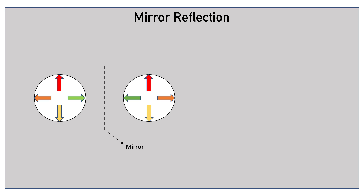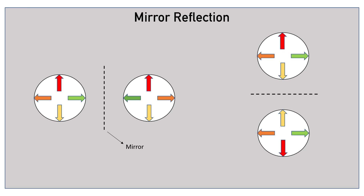In the mirror reflected image, the green arrow points left and the orange arrow points right. When the mirror is horizontal, the red and yellow arrows swap positions, but the green and the orange arrow remain intact. In the mirror reflected image, the red arrow points downward and the yellow arrow points upward.